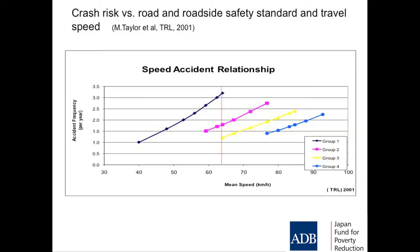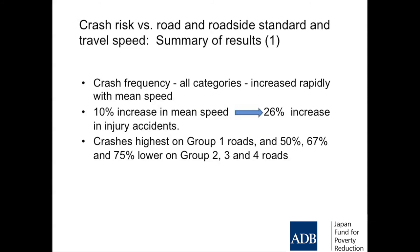Murray Taylor, at TRL in the UK, looked at 60 mile an hour roads, measured crash rates and travel speeds, and took one kilometre segments to create curves of travel speed against crash risk. The safest sections are on the left, and crash risk progressively gets worse. She found a 10% increase in mean speed gave a 26% increase in accidents. And crash rates on the safest sections were 50%, 67%, and 75% lower than on the least safe ones — very big differences along a single section of road.